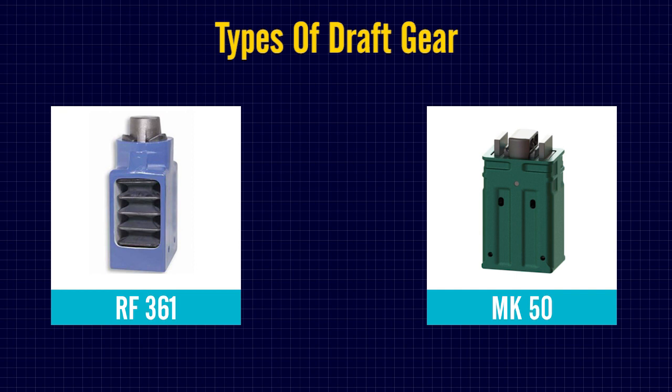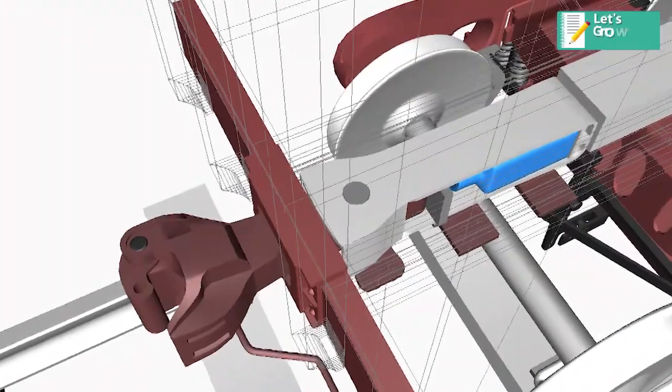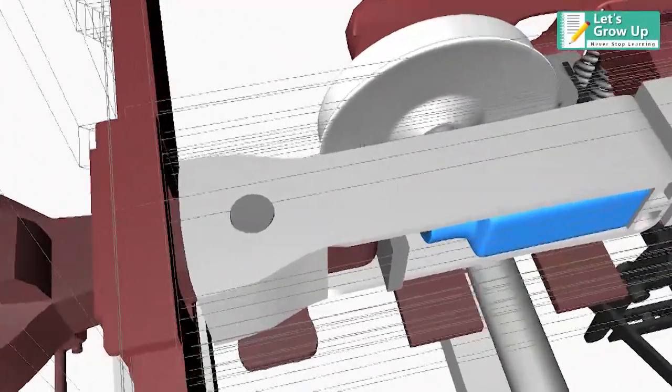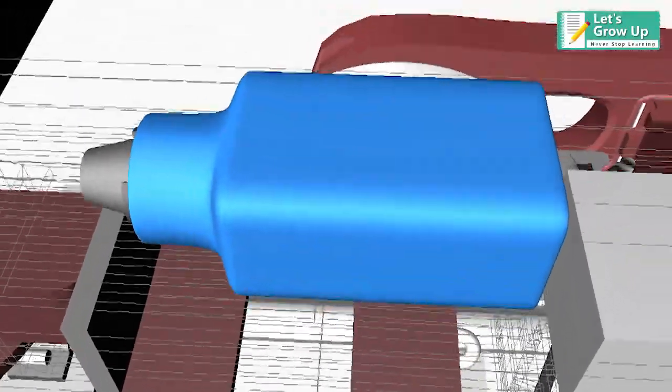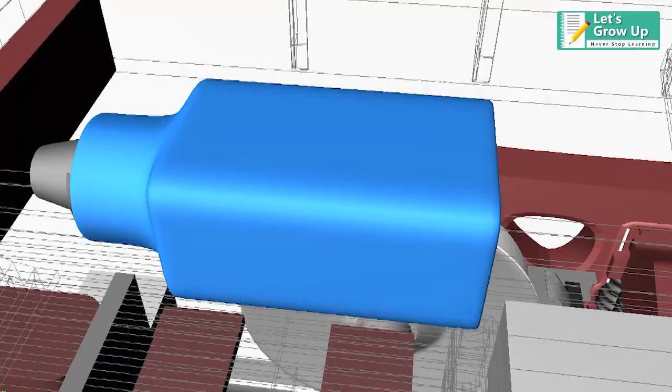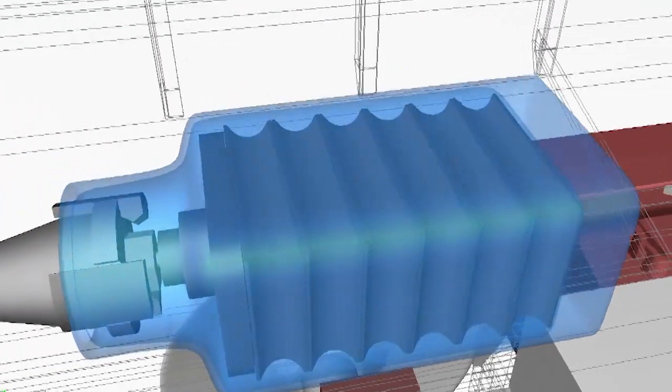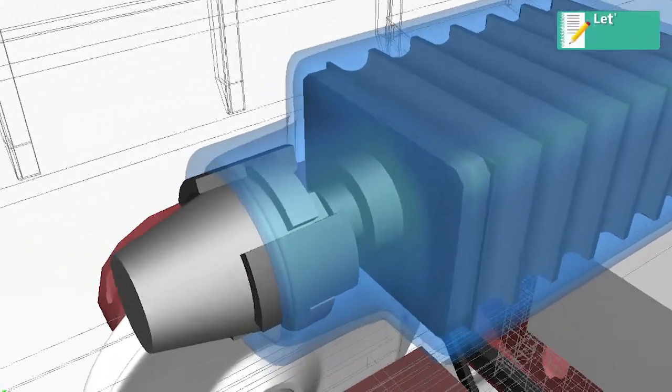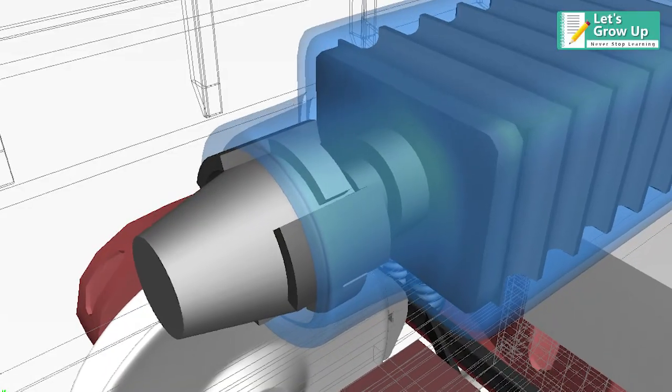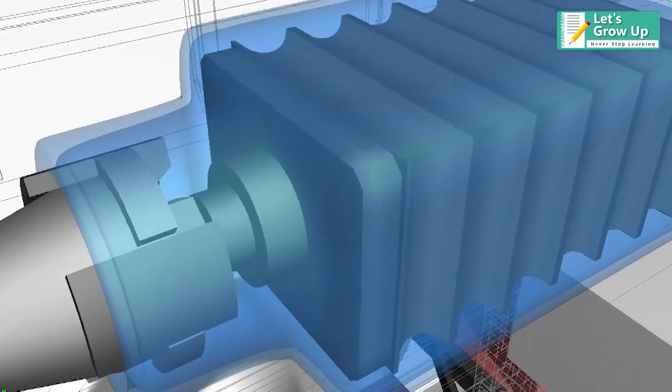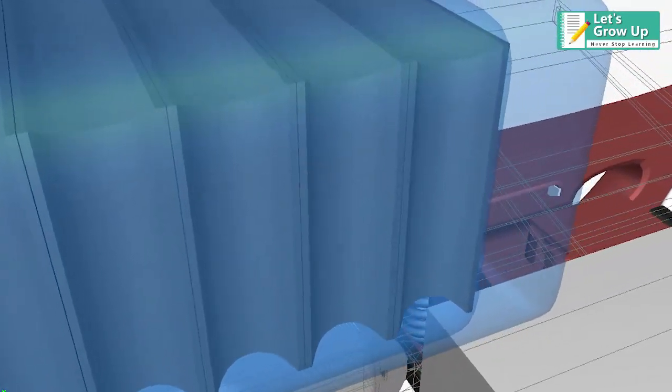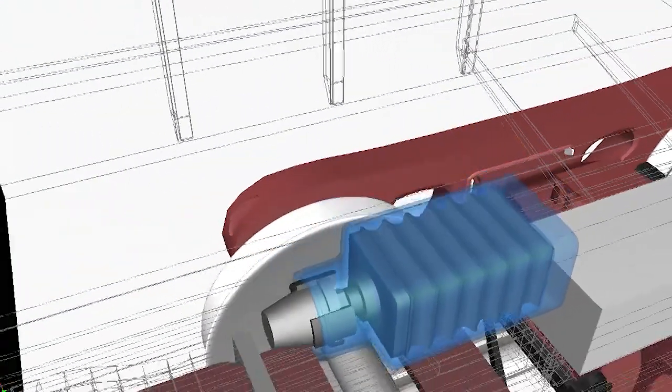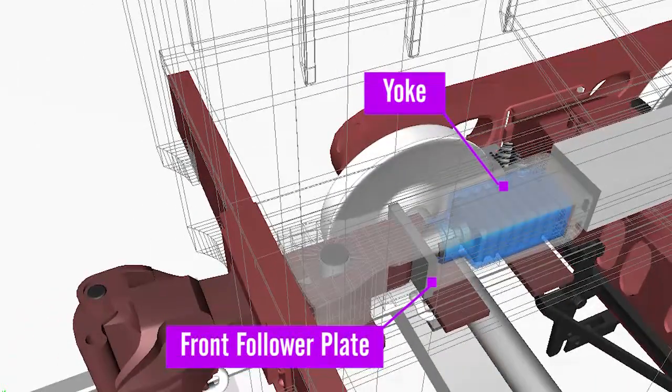RF 361 draft gear is a fully enclosed, self-contained unit assembled with a recompression force of rubber pads so that all parts are tight in relation to one another. The draft gear is tightly fitted in yoke with a front follower plate.